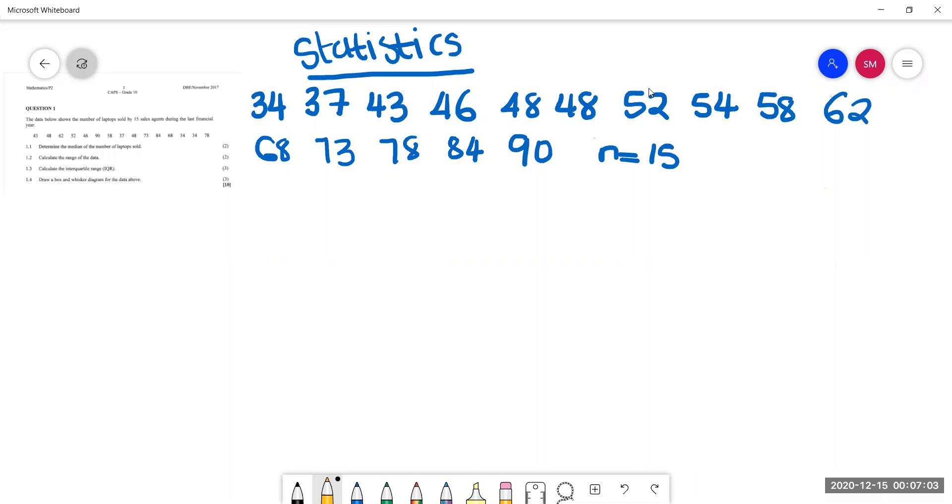So the question says the data below shows the number of laptops sold by 15 sales agents during the last financial year. We can already see that our data is not ranked, which means it's not written in numerical order. I've already done that on the section on the right hand side, so we can just jump straight into answering the questions.